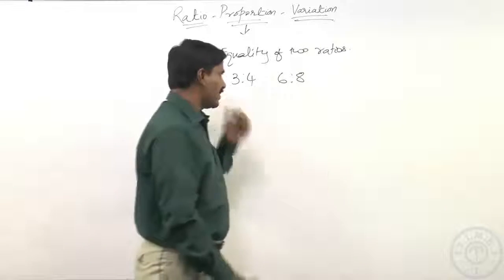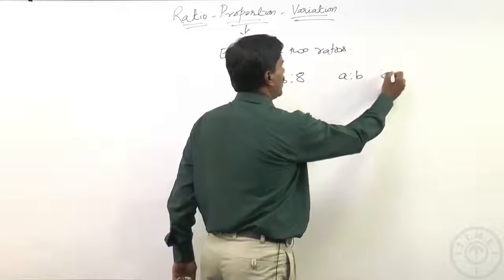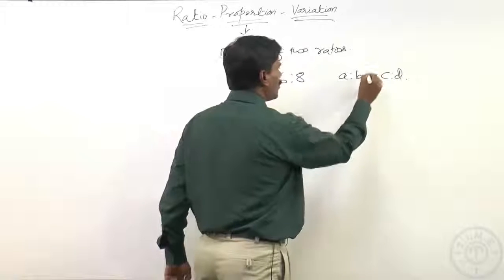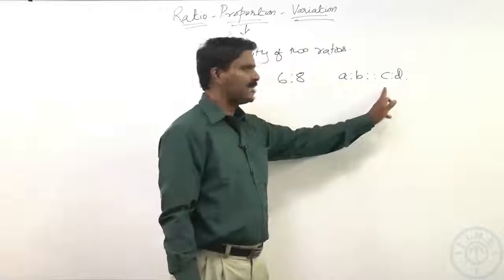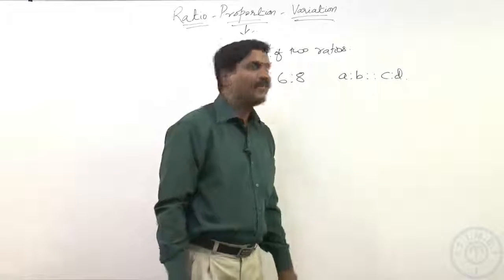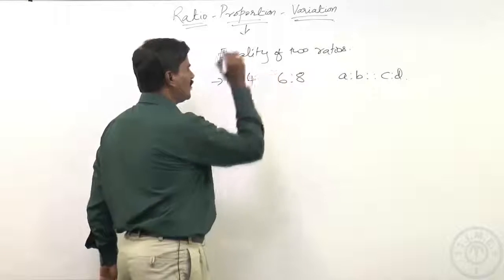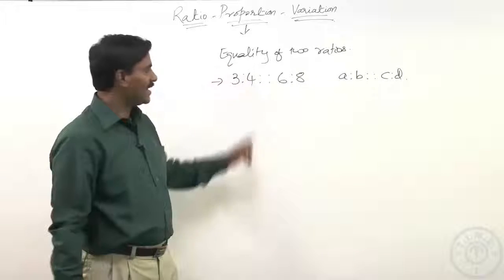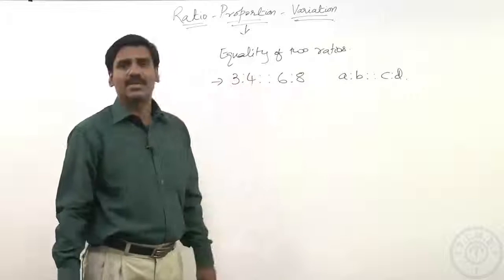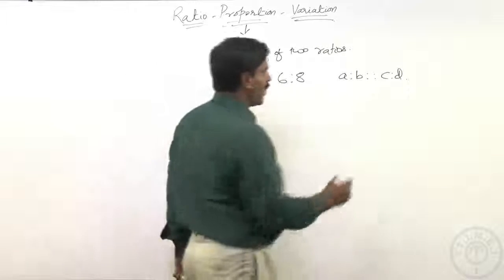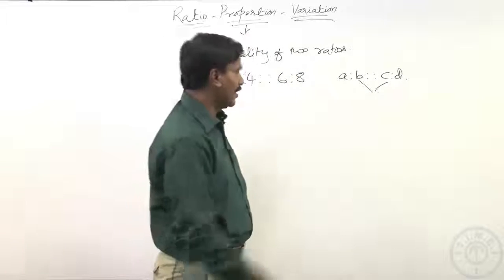When we have two ratios in proportion, like a is to b is in proportion with c is to d, then we use two full columns to represent that one, which is read as a is to b is same as c is to d. In the example, 3 is to 4 is same as 6 is to 8. Here b and c are the inner terms of that particular proportion.